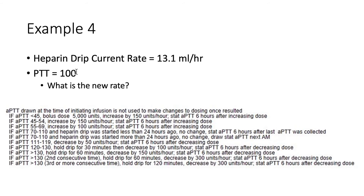For our last example, we have a heparin drip running at 13.1 mls per hour and the PTT is 100. What is the new rate? Since the PTT is 100, we're going to follow one of two directions because it's between 70 and 110. If the heparin drip was started less than 24 hours ago, we follow these directions; if more than 24 hours ago, we'd follow the other. For this example, the drip was started less than 24 hours ago, so we make no change and draw a stat PTT six hours after the last PTT was collected. The rate stays at 13.1 mls per hour.